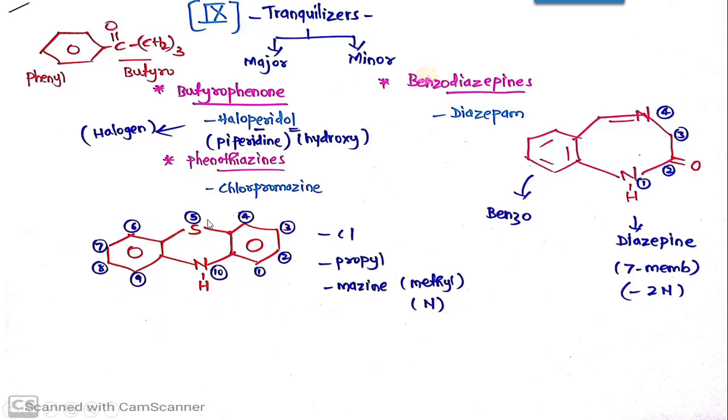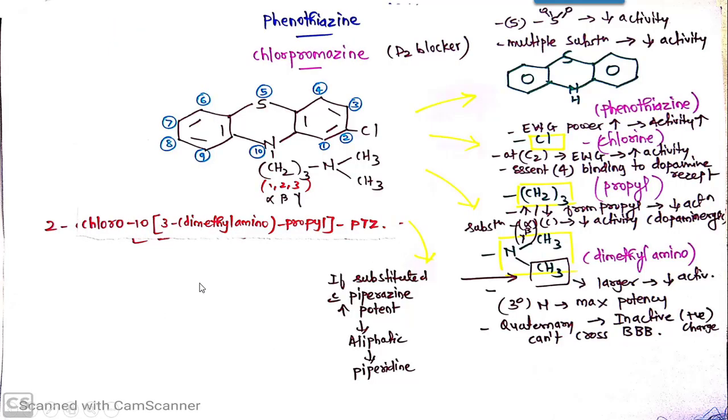So it is 1, 2, 3, 4. Sulfur is at 5th position. 6, 7, 8, 9 to the other phenyl and nitrogen is at 10th position. Now moving towards the actual example Chlorpromazine to talk about the structural features along with SAR.